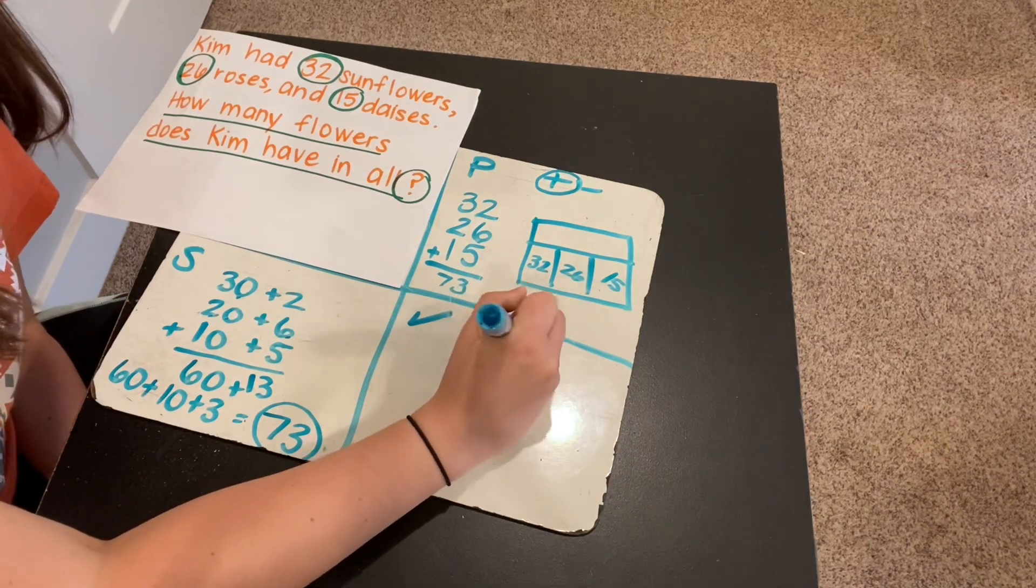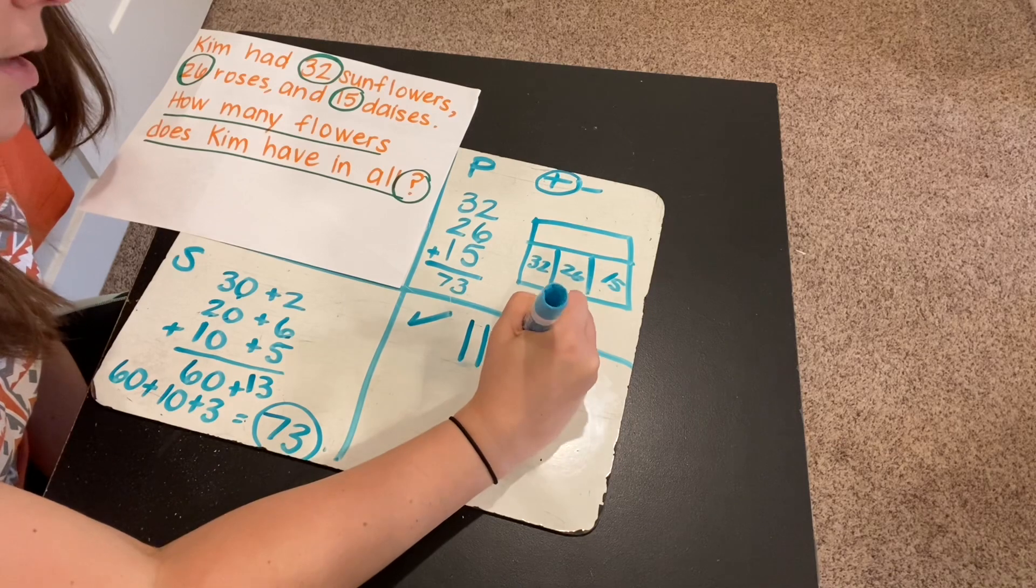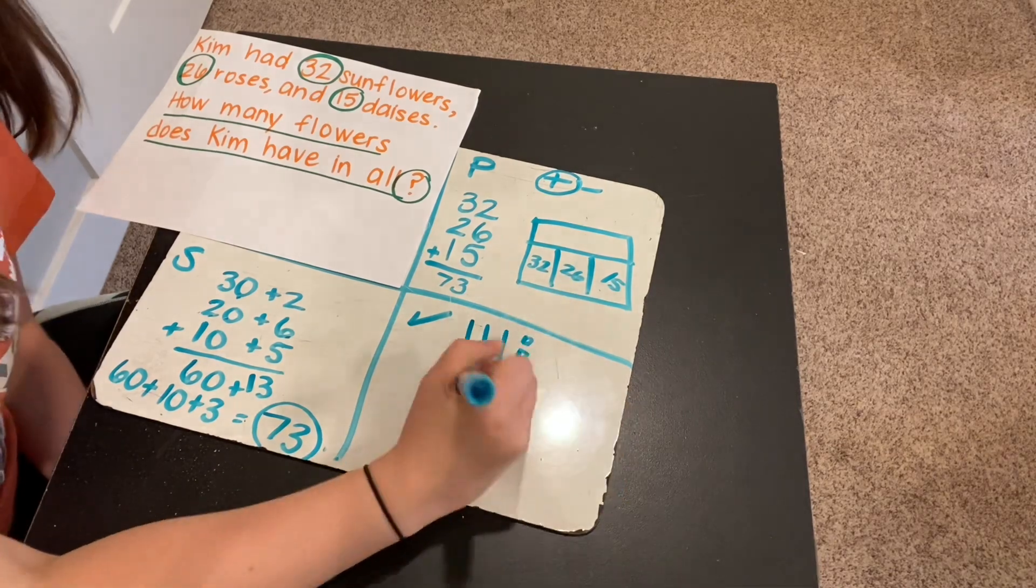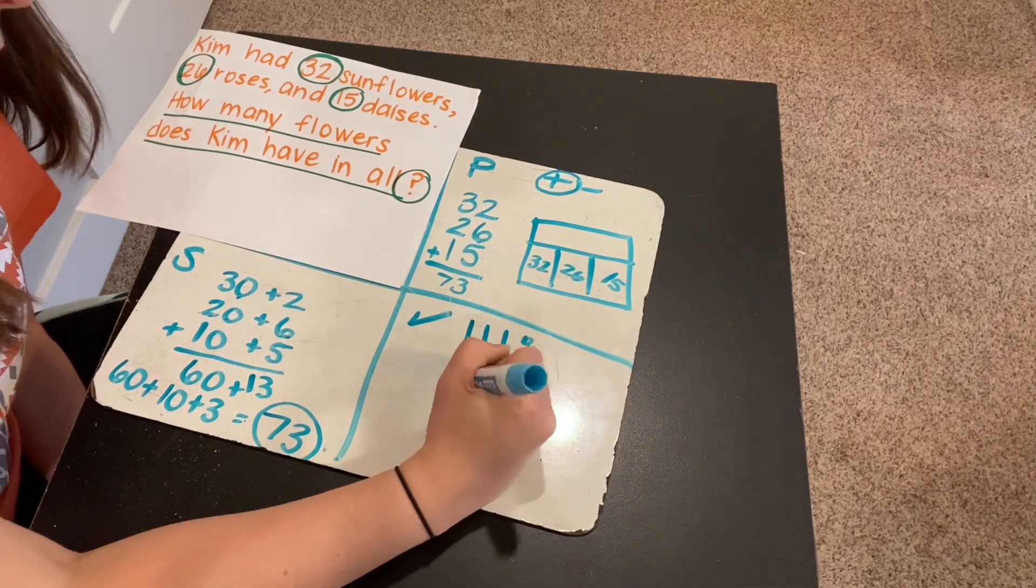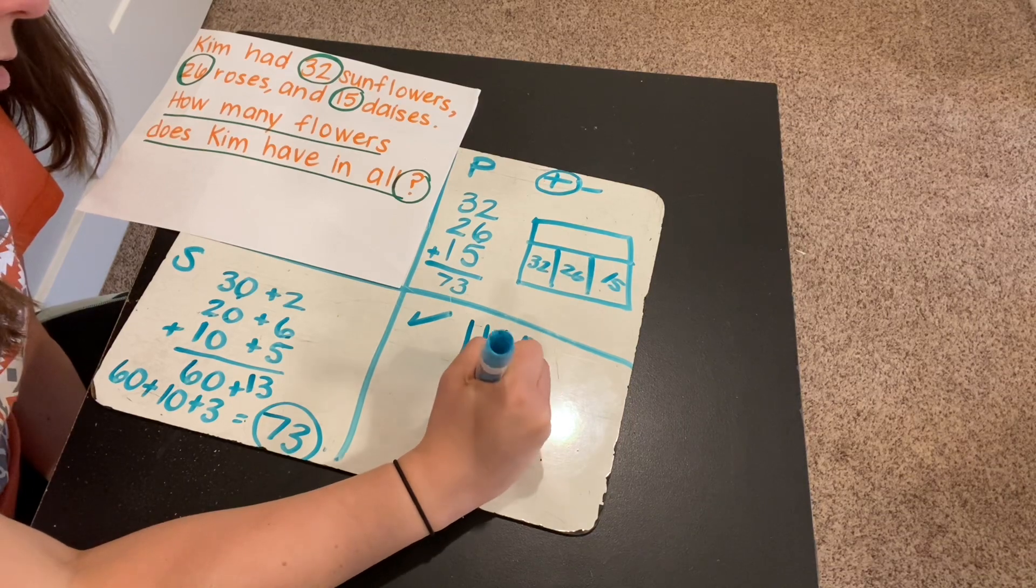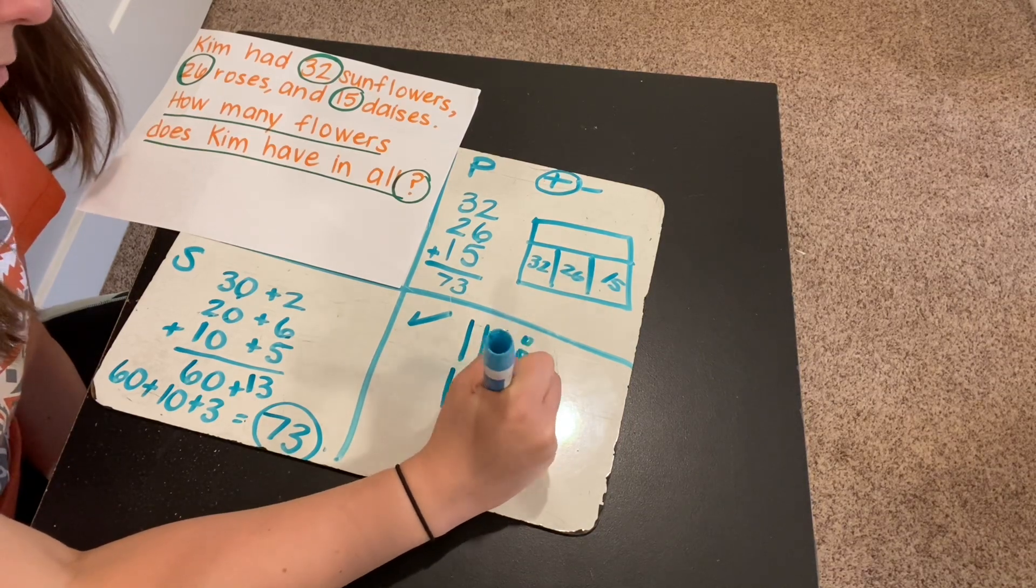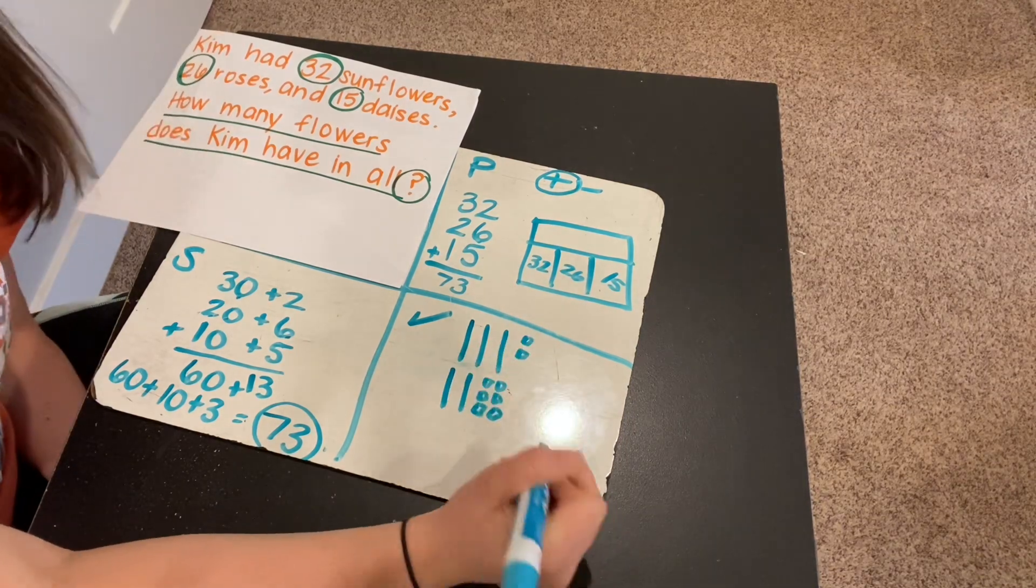So 32 base 10 blocks. There's 10, 20, 30. 31, 32. 26. 10, 20. 21, 22, 23, 24, 25, 26.